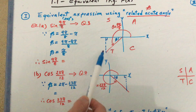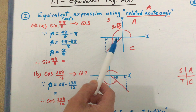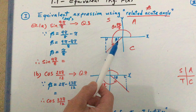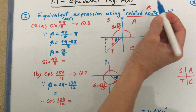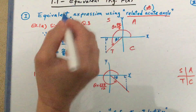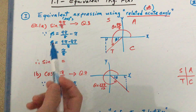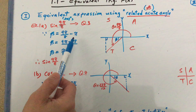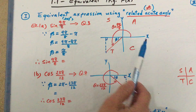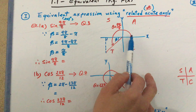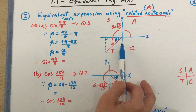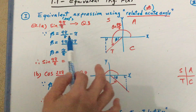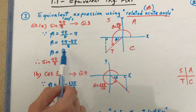The reference triangle that we can draw in quadrant 3 — inside this reference triangle, the angle beta is going to be our related acute angle. Remember, I always use beta as the related acute angle. To calculate the related acute angle using the bow-tie method, we take that entire angle and subtract pi, because from here to there is pi. So we take this bigger angle, subtract pi, and with common denominator, we get pi over 8.